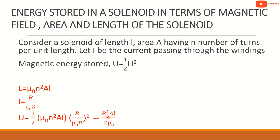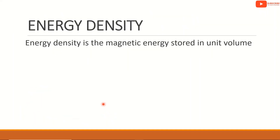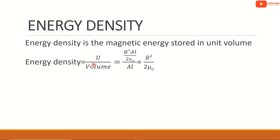Substituting into the energy expression gives U equal to B²·A·l divided by 2μ₀. The energy density, which is magnetic energy per unit volume, equals U divided by volume, which simplifies to B² divided by 2μ₀.